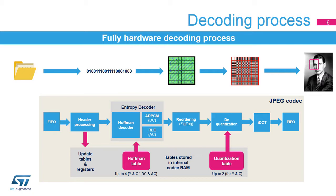The compressed data are sent through the entropy decoder to generate the 8-by-8 minimum coded units, or MCUs, using the zigzag ordering. The resulting 8-by-8 tables are dequantized and transformed through an inverse DCT, or IDCT, into the original picture data.